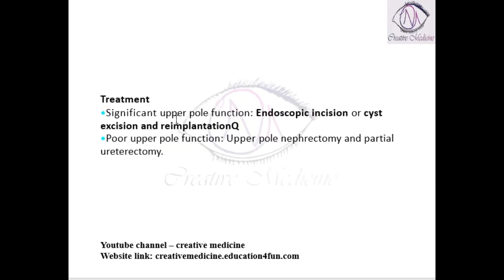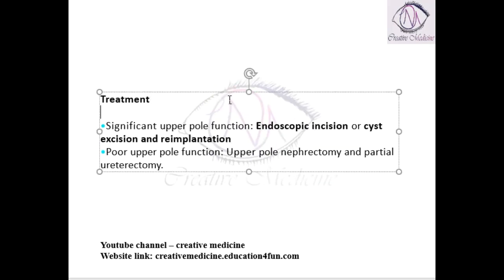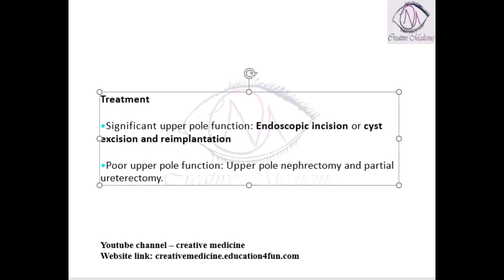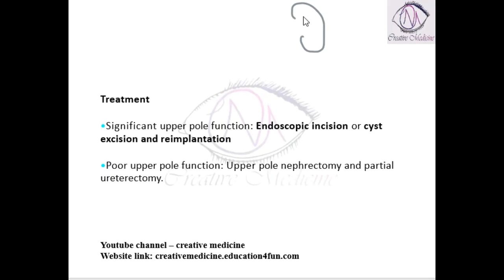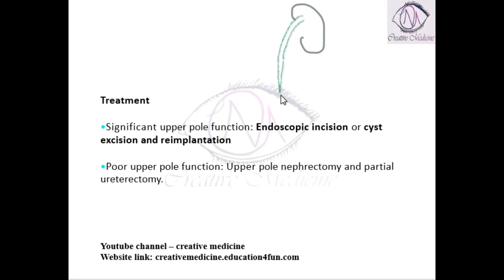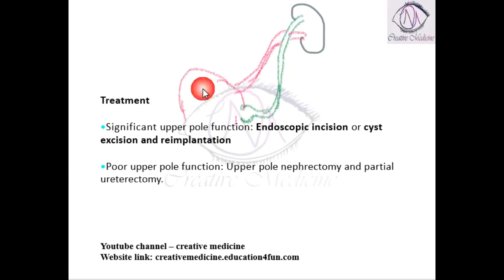Treatment depends upon the upper pole function. In duplicated ureters, the upper pole is supplied by the ureter with the ureterocele, while the lower pole ureter is normal and attaches to the bladder. If the upper pole function is significant and normal, only an endoscopic incision is done — you incise and remove the cyst, then re-implant the ureter into the bladder.